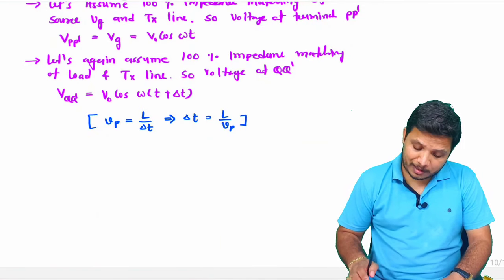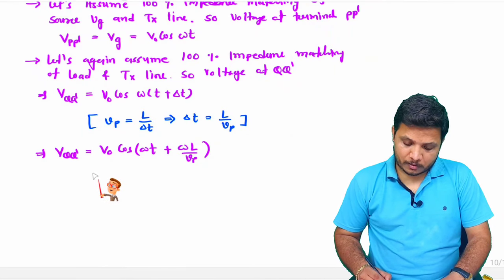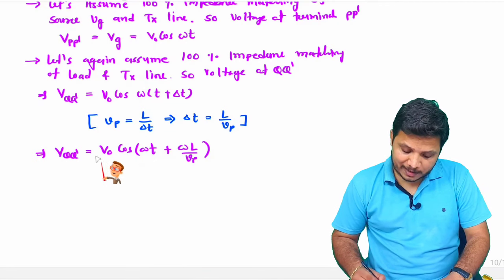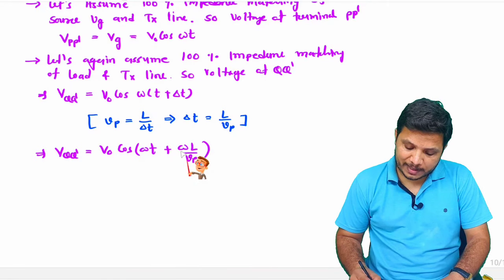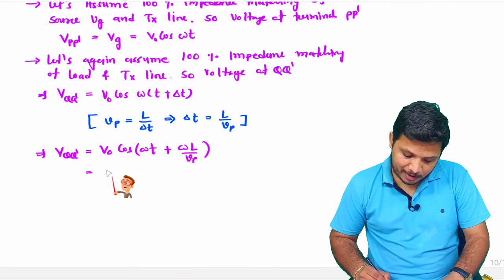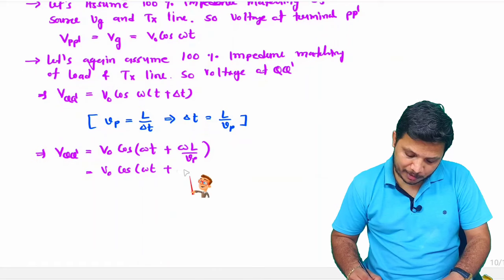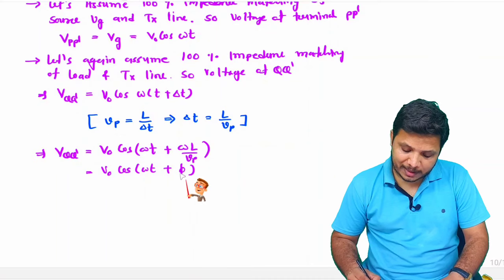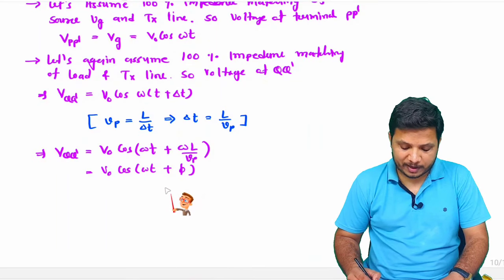Substituting delta t into the equation, when the signal reaches the load there will be a generation of phase equal to omega times L divided by Vp. So the voltage at the load becomes V0 cos(omega t + phi), where phi equals omega L / Vp. We now need to understand how this phi depends on different parameters.